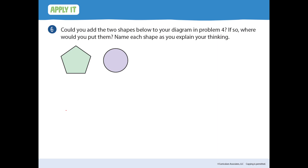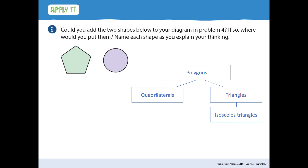Number six: could you add the two shapes below to your diagram in problem four? If so, where would you put them? Name each shape as you explain your thinking. You could add the pentagon to the diagram, but not the circle. The pentagon would be another category under polygon, because it is a shape with straight sides, no curves, and no gaps. The circle does not fit on our diagram because circles are not polygons — they have curved sides.